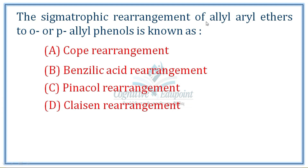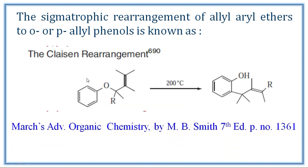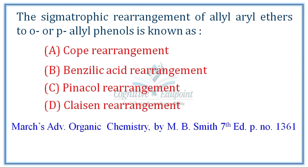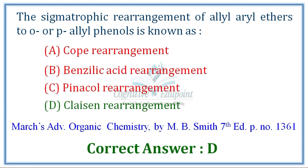Next question: The sigmatropic rearrangement of allyl aryl ethers into ortho or para allyl phenols is known as? This is a well-known reaction — the Claisen rearrangement, a sigmatropic rearrangement. The correct answer is D — Claisen rearrangement.